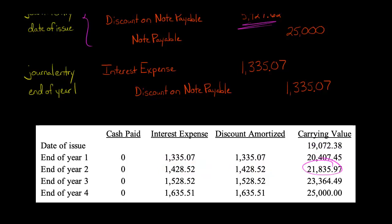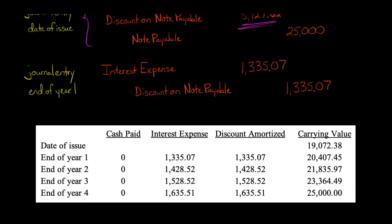Multiply $21,835.97 by 7% to get the interest expense recorded at the end of year three. That discount is added to the carrying value, bringing the new carrying value to $23,364.49. Multiply that by 7% to get the interest expense for the end of year four: $1,635.51. Making that entry — debiting interest expense and crediting discount on note payable for $1,635.51 — brings the carrying value to $25,000.